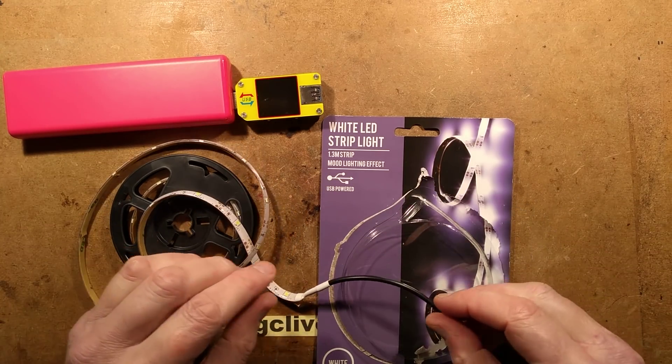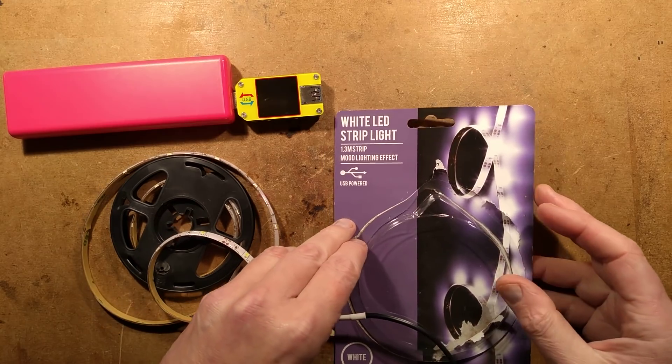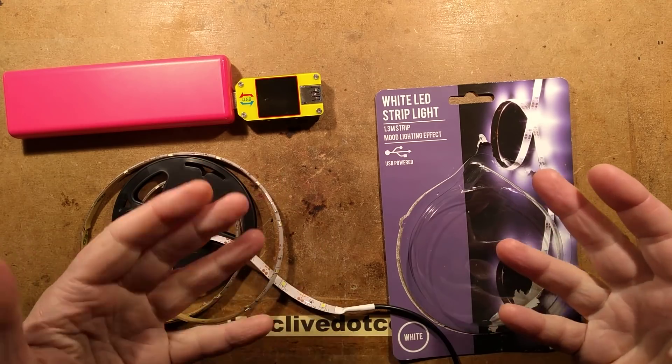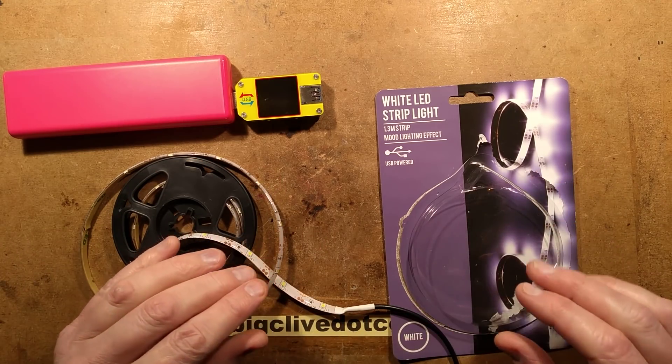Poundland is doing LED tape at the moment, or Dealz as we call it in Ireland and the Isle of Man. It's the same shop as Poundland, but it's £1.20 for most things.